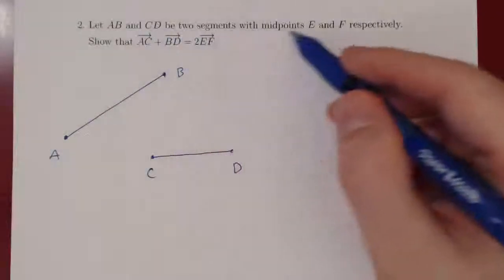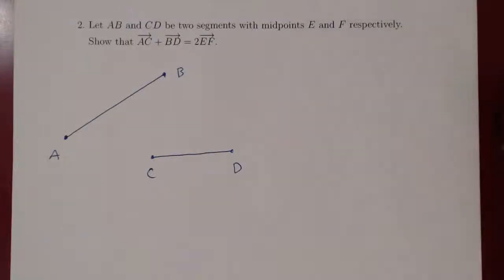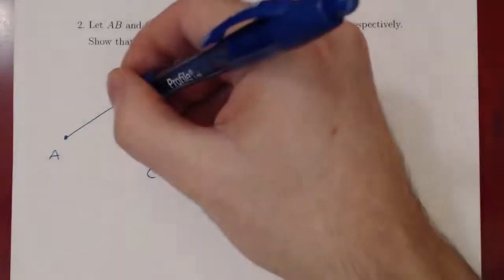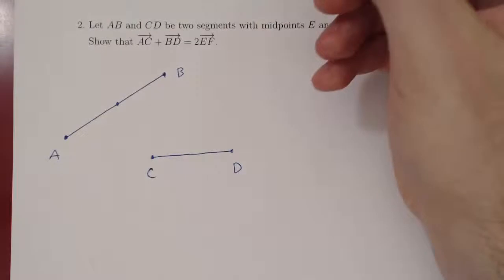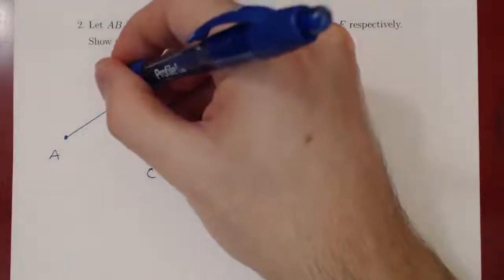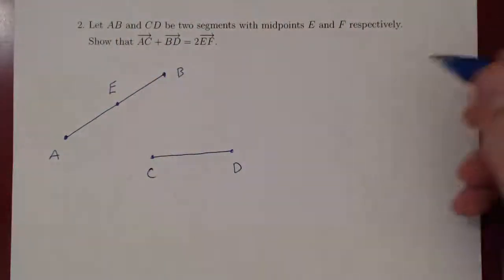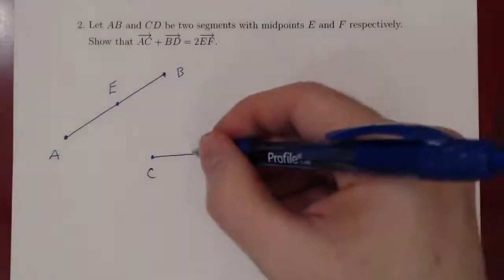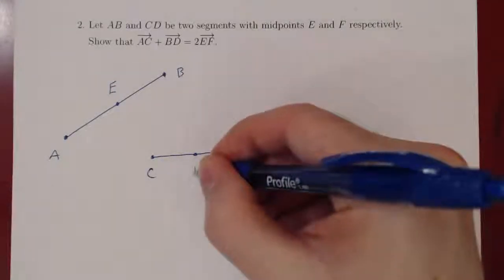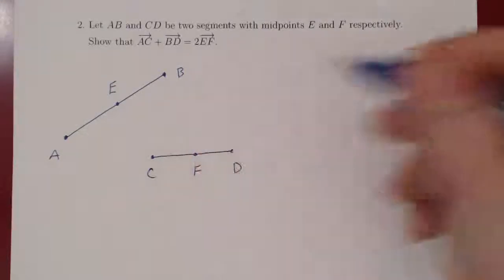AB and CD are two segments with midpoints E and F respectively. Therefore, E is the midpoint of AB, so it cuts the segment into two equal parts. And the same goes to F and CD. F is the midpoint of CD, so it cuts the segment into two equal parts.